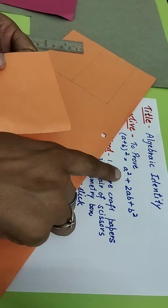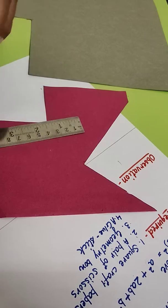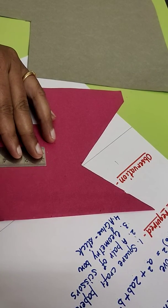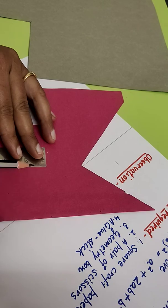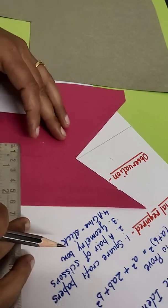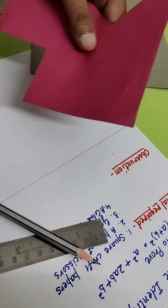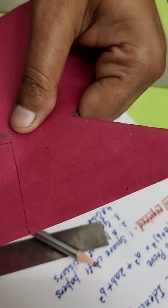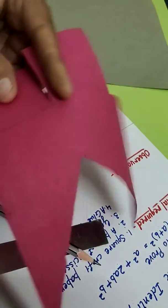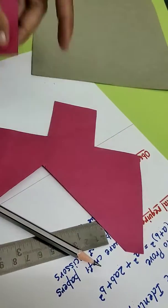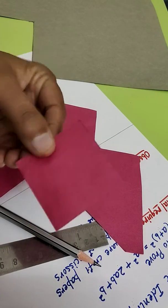So we got this square with the side 8cm and that 8 we are taking a, a equals to a I am taking here. Next I am going to cut another smaller square piece with length 5 means the side of the square will be 5.